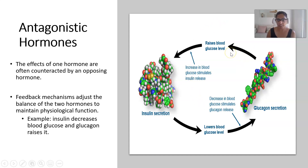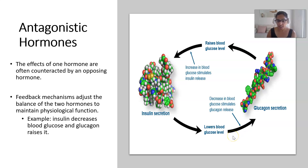Looking at this simple flow diagram: if we have an increase in blood glucose concentration, the beta cells in the pancreas are stimulated to secrete insulin. Insulin will stimulate glucose to move into body cells, and this will lower blood glucose concentration. If that level of glucose gets too low — for example during fasting or when you wake up in the morning after a period without eating — the hormone glucagon, produced by the alpha cells in the islets of Langerhans, will stimulate stored glucose to be released and raise blood glucose again. So these two hormones are antagonistic, working in opposition.